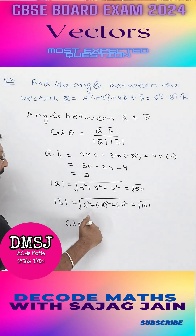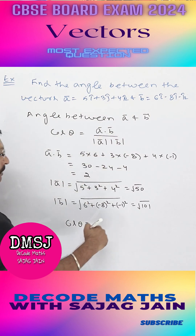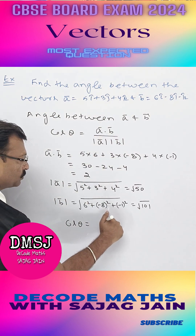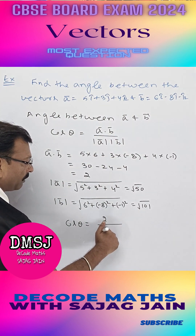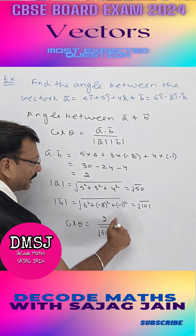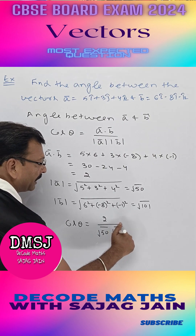Now cos theta equal to a dot b. A dot b is 2, divided by under root of 50 into under root of 101.